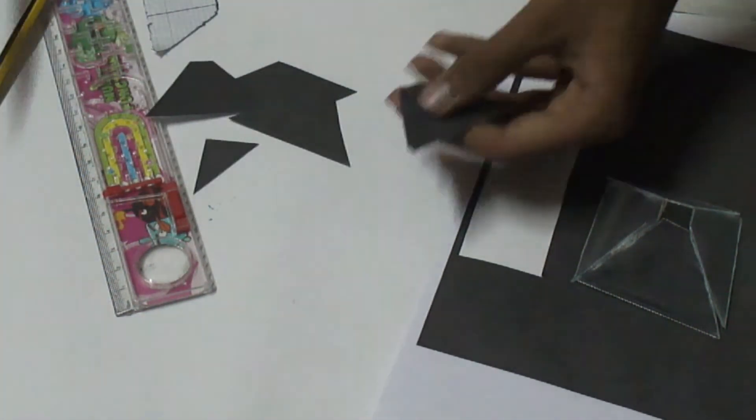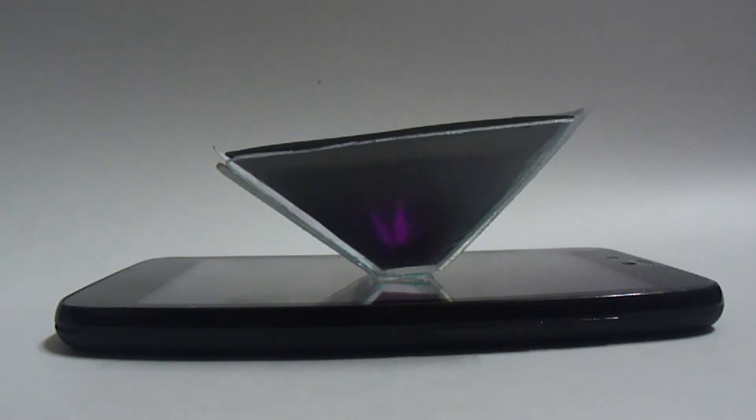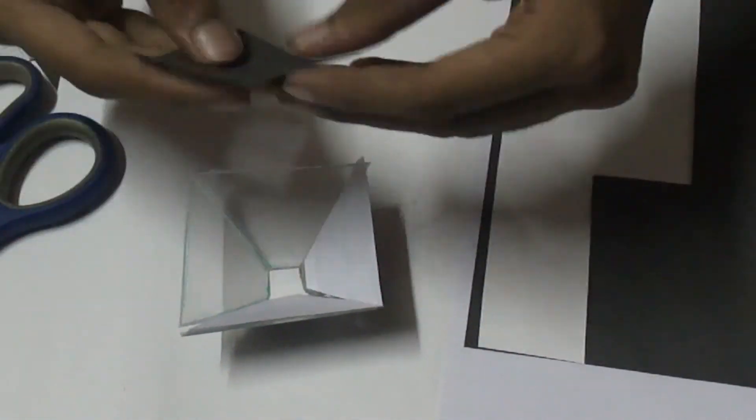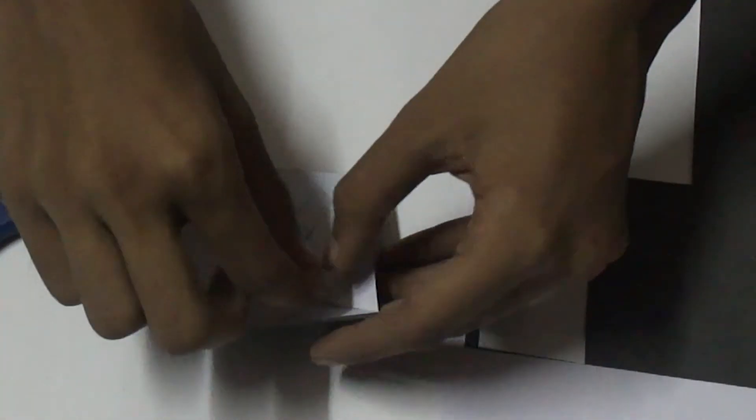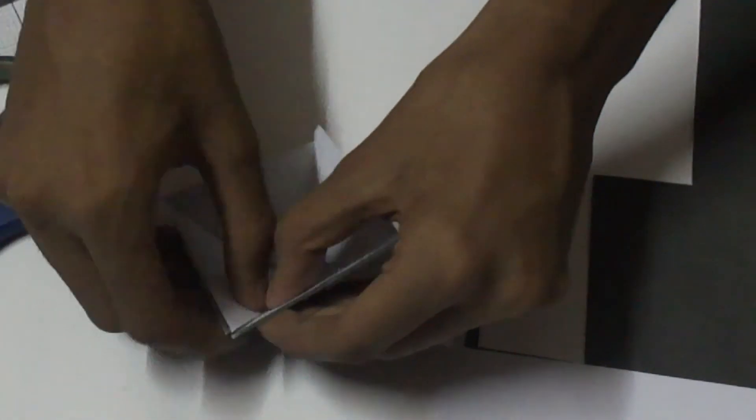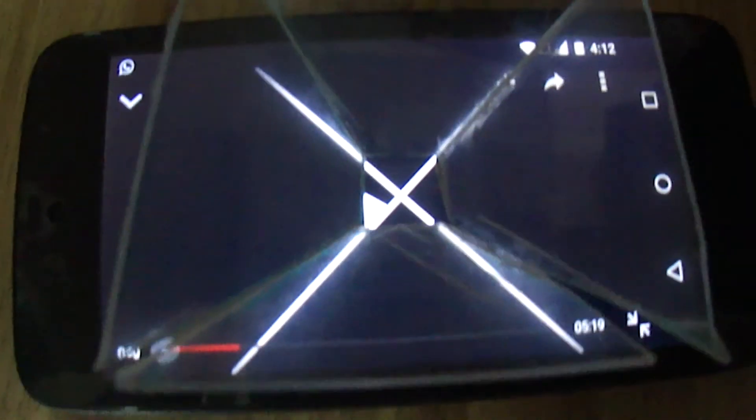See what happens. This is without black paper, and this is with black paper. With black paper, you don't need to make your room dark. Otherwise, you need to turn off all the lights in your home to see this hologram. Here you go.